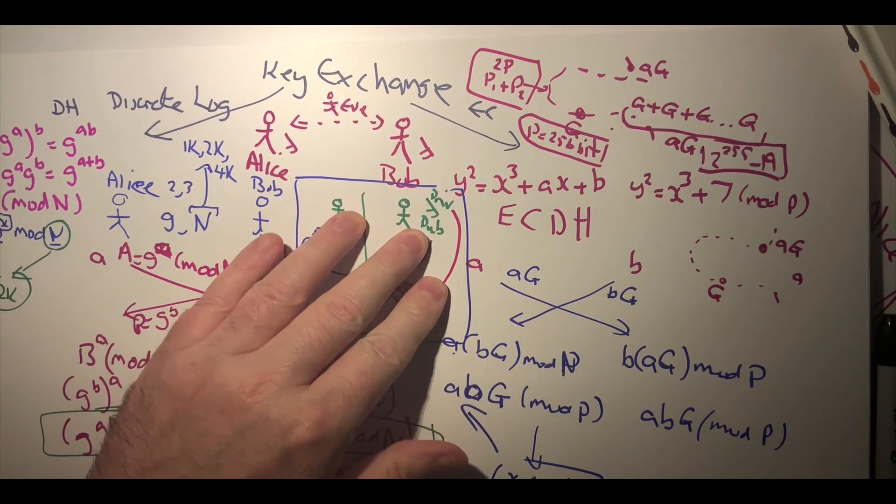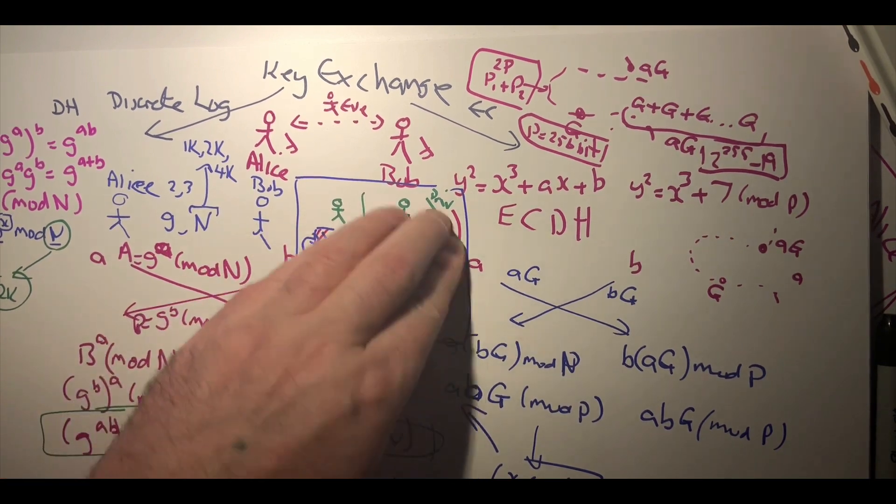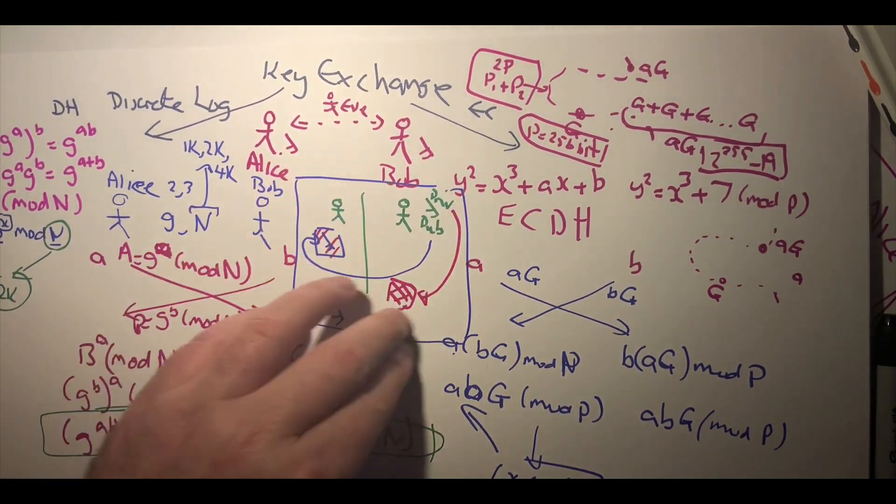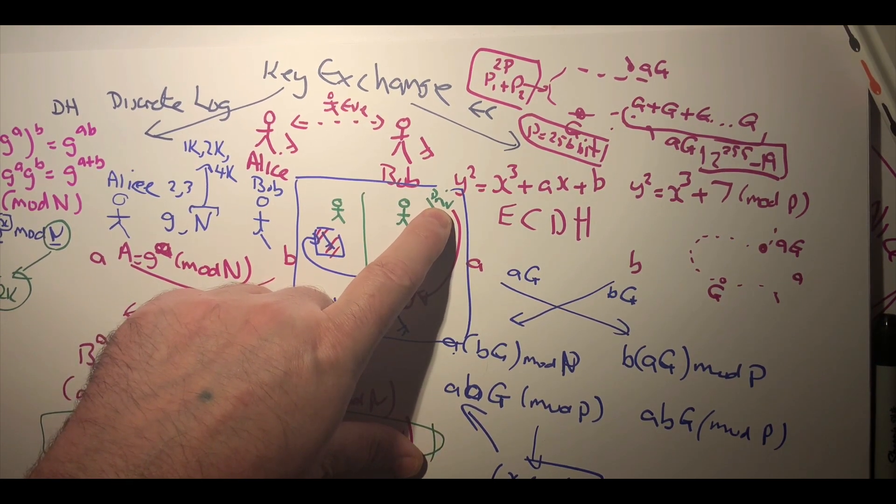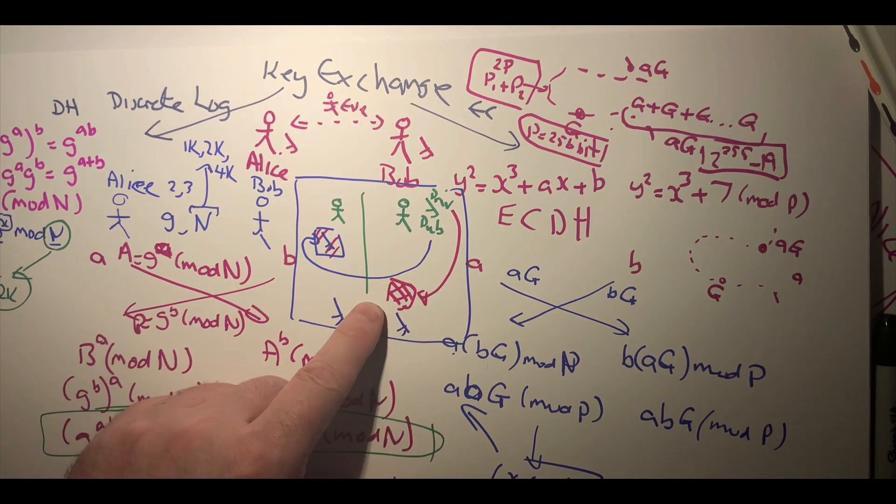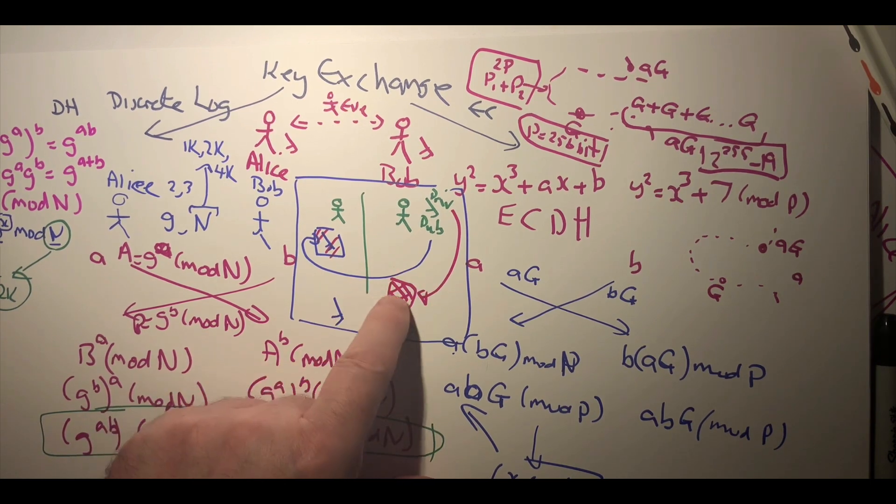So this is the third method, but this method is not liked these days because a long-term hack or a hack of the private key at some time will release all of the encrypted keys that were passed in the past.